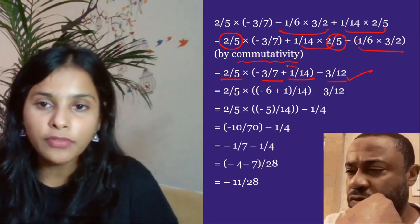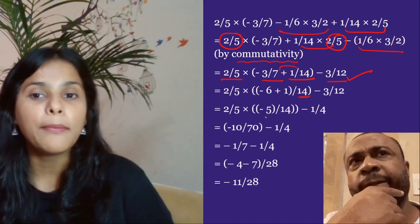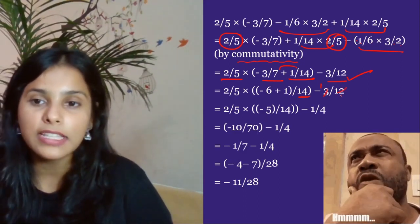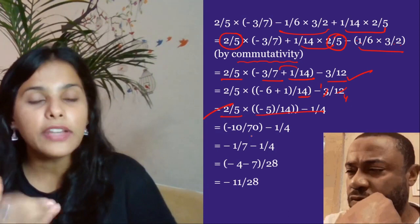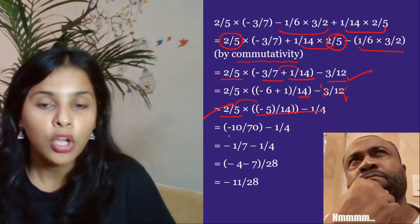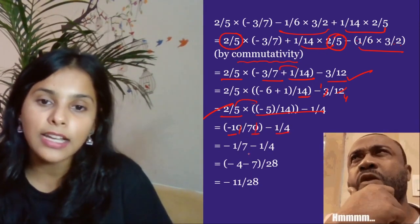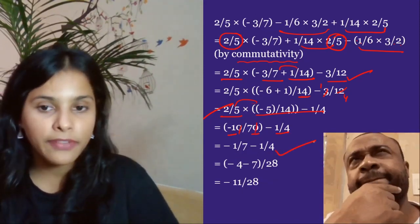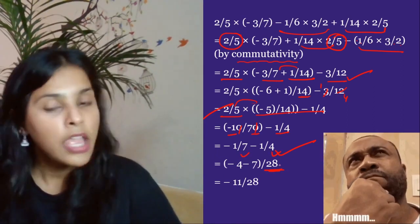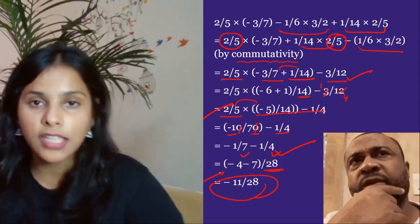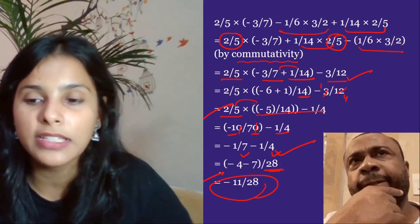Now we are going to take the LCM of these two. LCM gives 14. After LCM, 2 gives 6 plus 1, so this becomes minus 5/14. And this becomes 3×1=4 giving 12, and 2/5 gives 3. Now what we have done is multiply them: minus 10/70 minus 1/4. So the result is minus 1/7 minus 1/7 minus 1/5. Dusted!